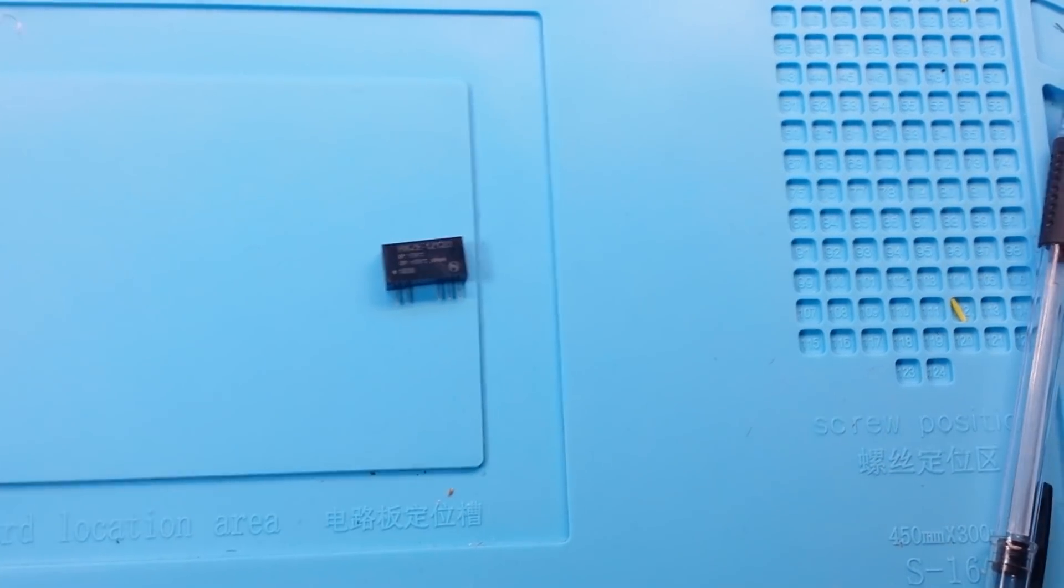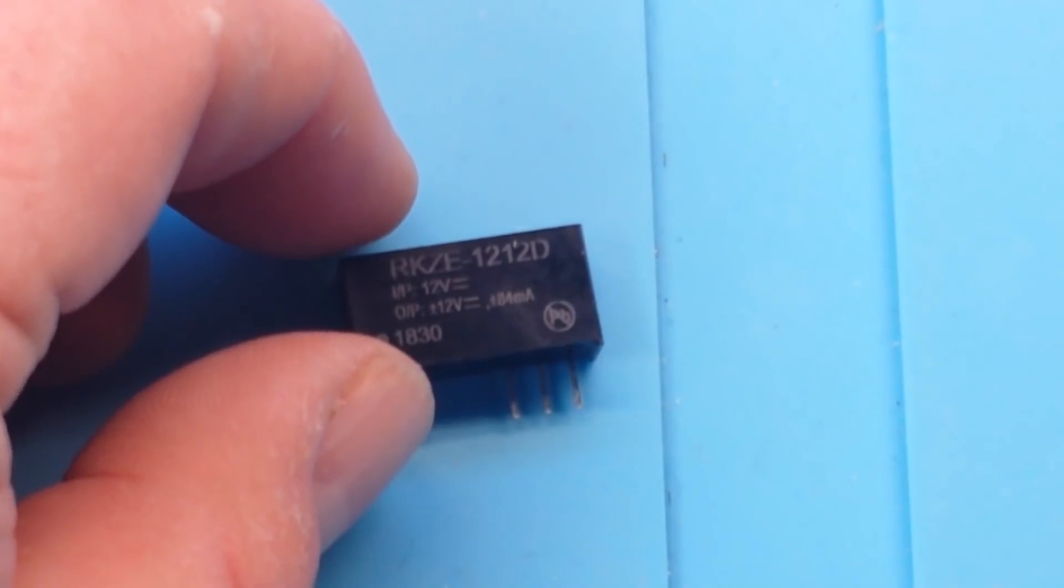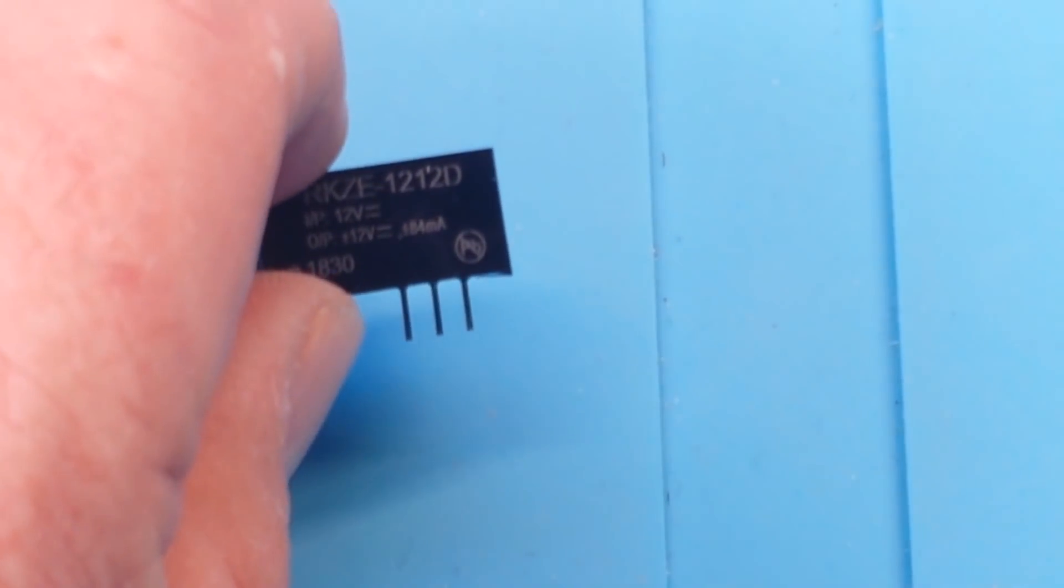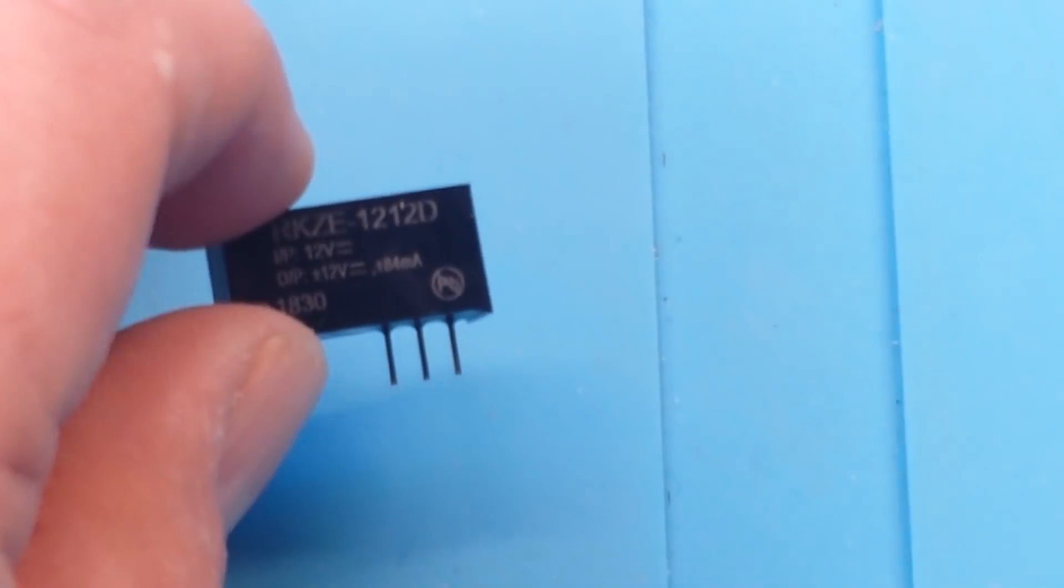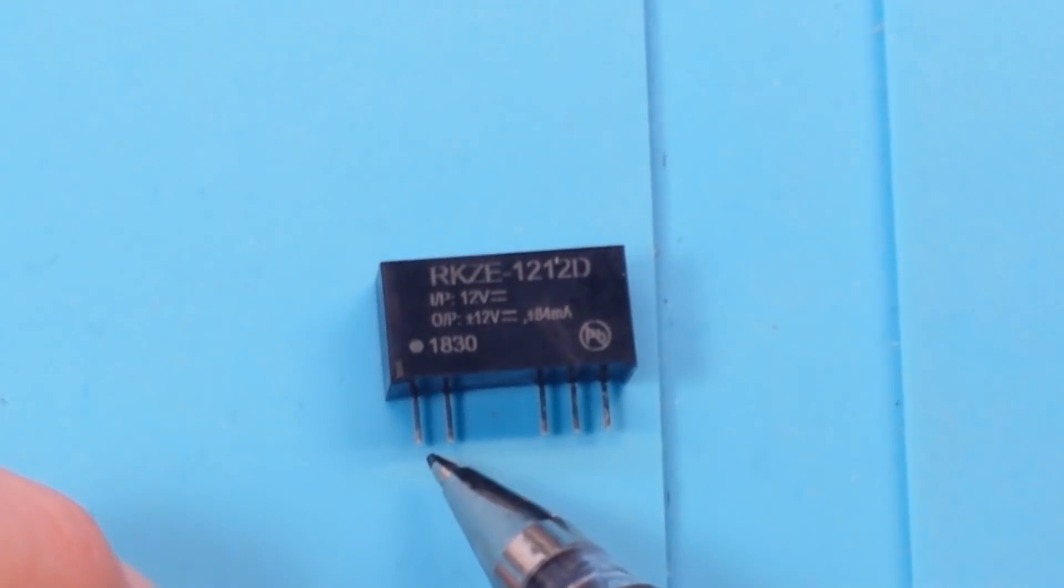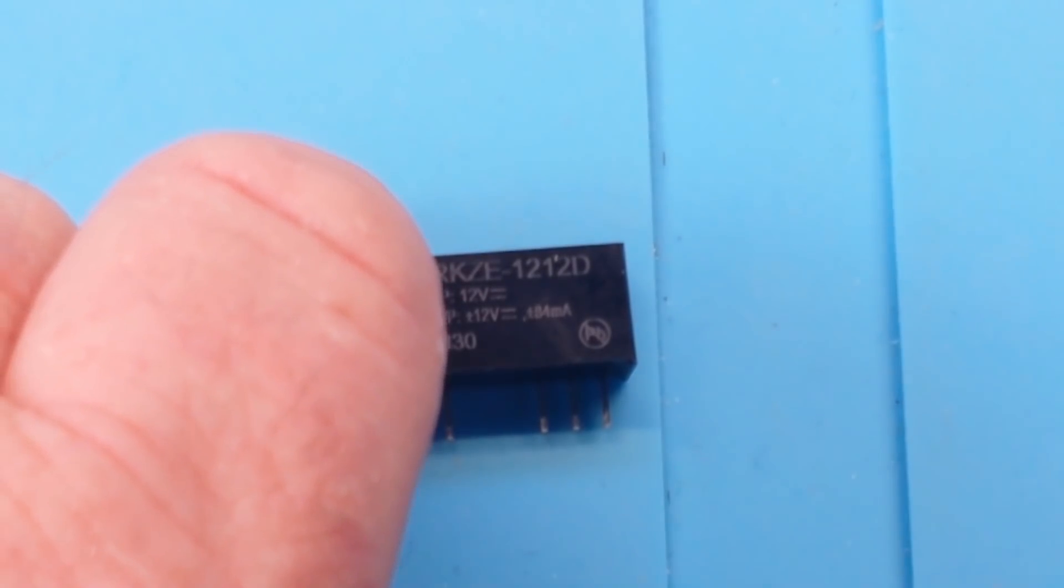This is the RKZE 1212D from Recom, and I think it's a pretty unique little IC. It is a 2 watt converter in a SIP7 package and this is a 12 volt version. So we put in a single 12 volt input and we get out both positive and negative 12 volts. So here are pins one, two, five, six, seven. One is our VCC, two is our ground, pin five is negative 12 volts, pin six is common, pin seven is positive 12 volts. So that's pretty cool.